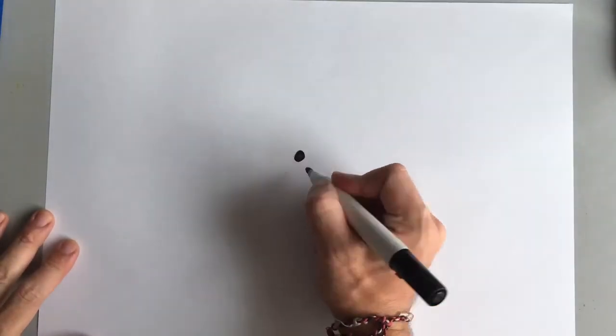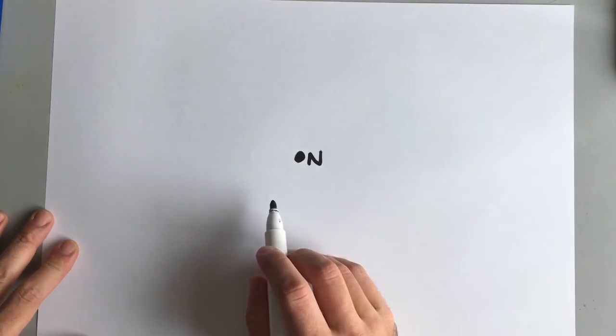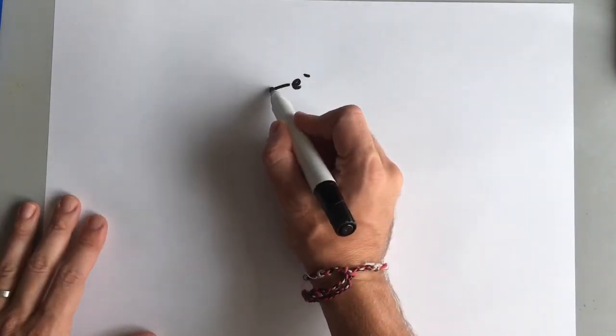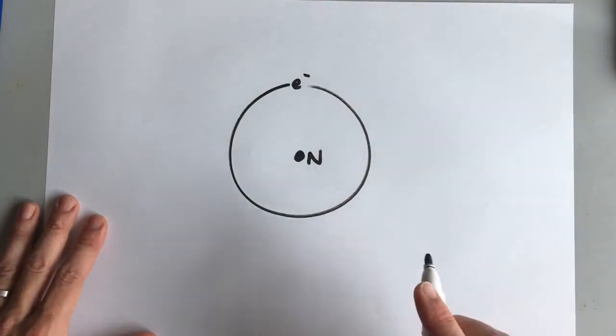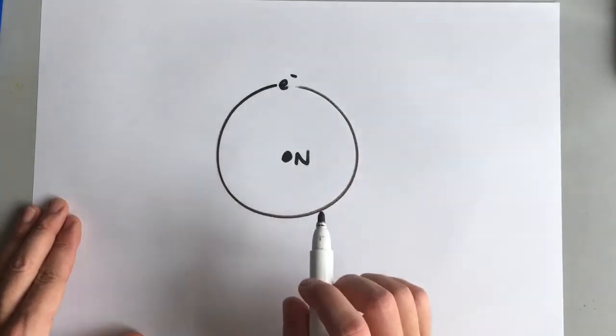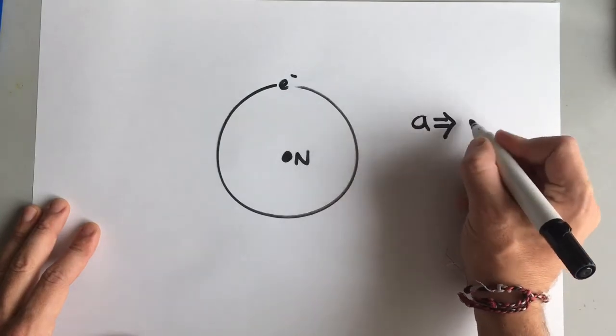Now the second problem that scientists faced at this time at the beginning of the 20th century was the model of the atom. We know that the nucleus is in the middle of the atom and there are electrons orbiting around the nucleus. Now classical physics tells us that if a charged particle accelerates, it gives out energy.